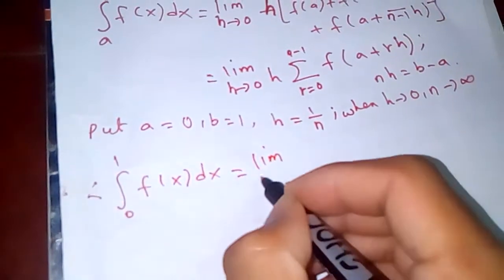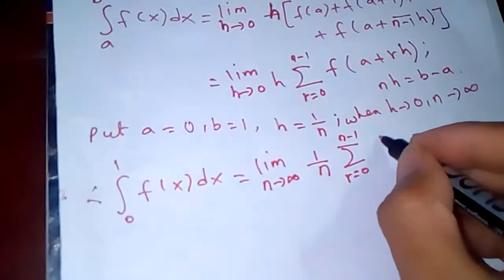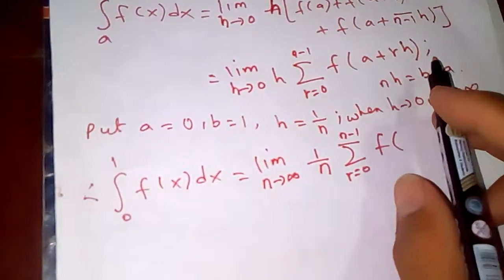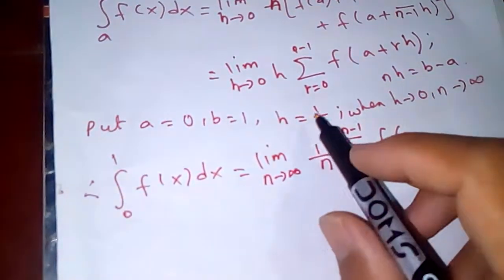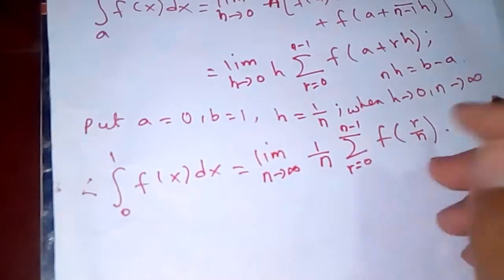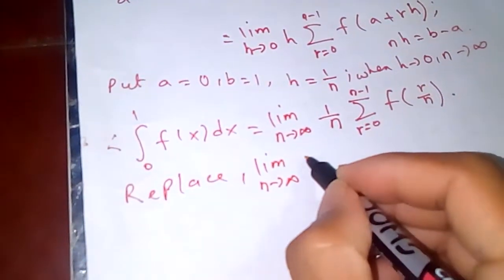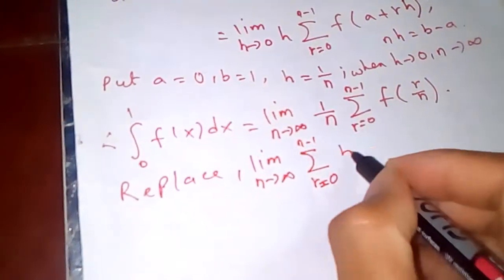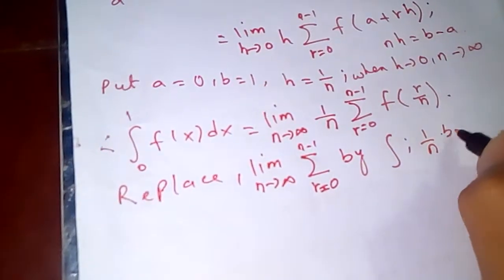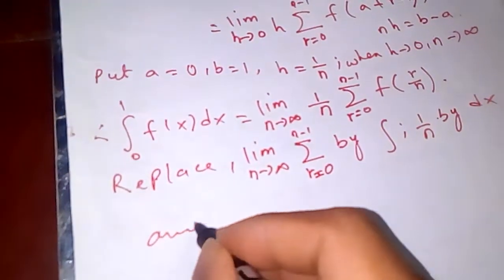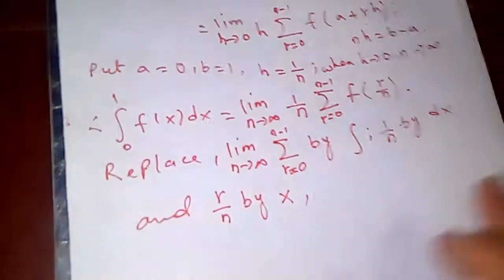This equals the limit as n tends to infinity of (1/n) times the sum from r equal to 0 to n minus 1 of f(r/n), since a is 0 and a plus rh is simply r over n. So we replace the summation symbol with the integral symbol, 1/n with dx, and r/n with x.